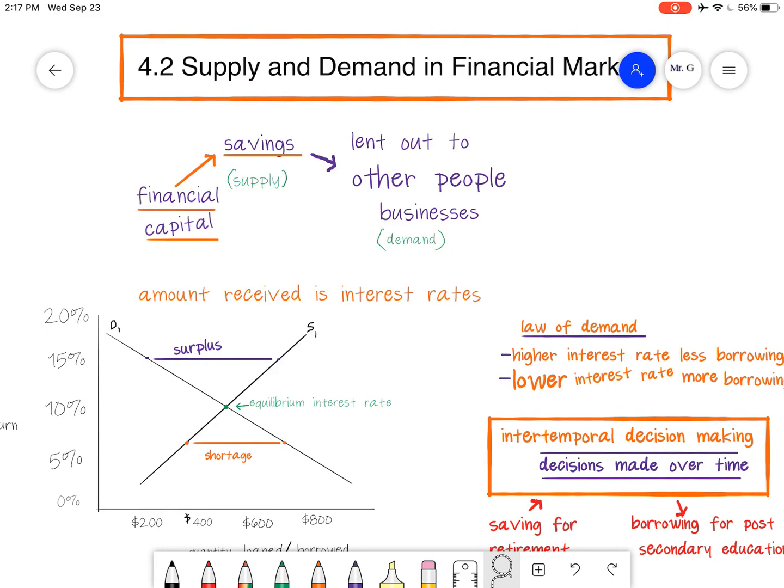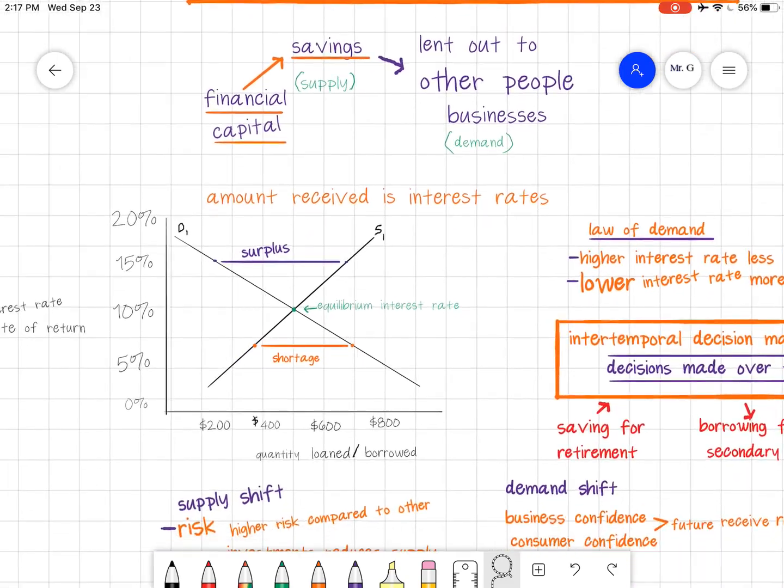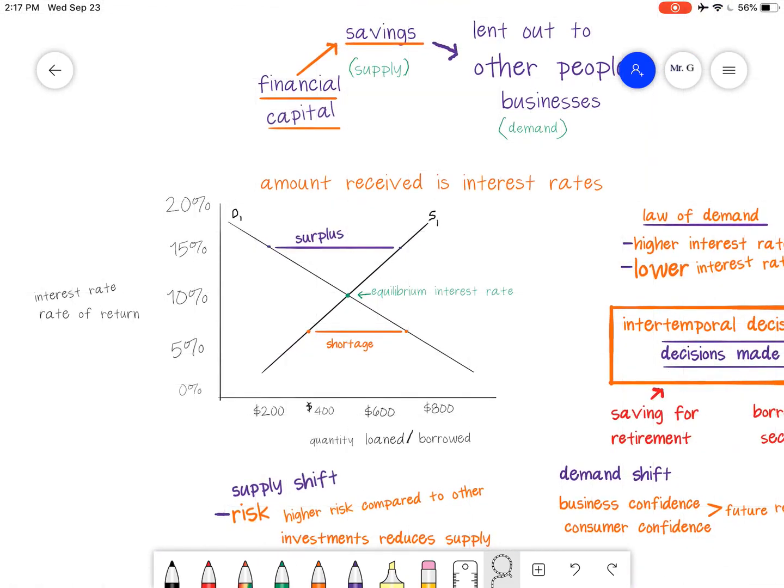Financial capital savings, essentially what happens is you're saving the money, you lend out to other people and businesses, and that's the demand. The demand is how much demand is there for loans and how much is there for supply. On the Y-axis, we have interest rate or rate of return, basically a percentage.